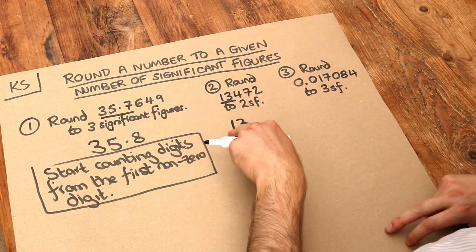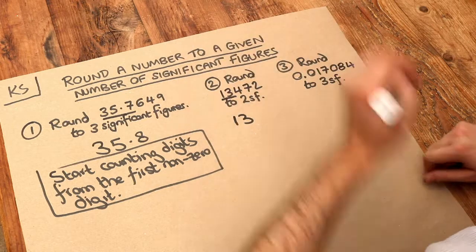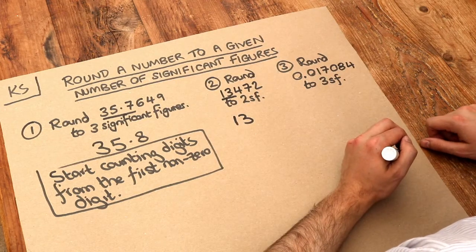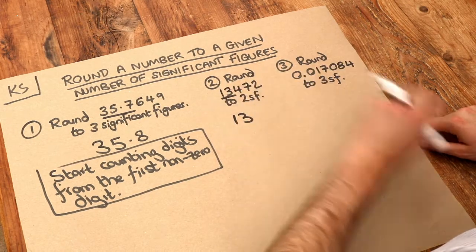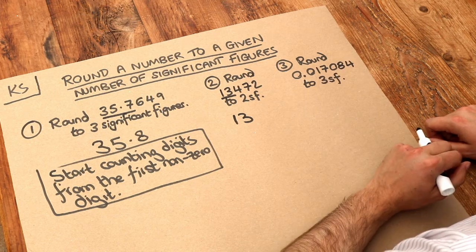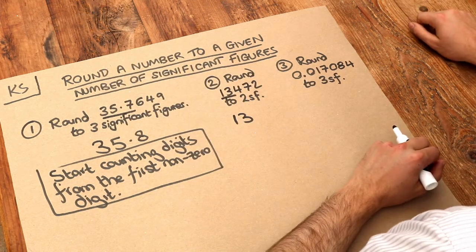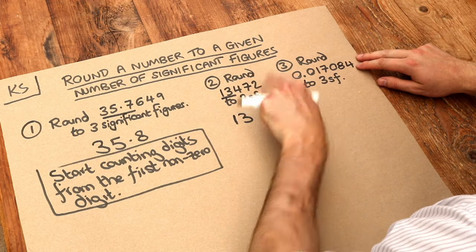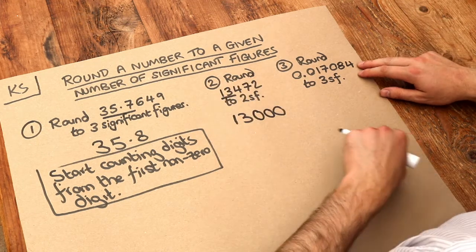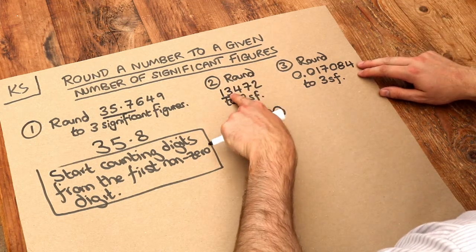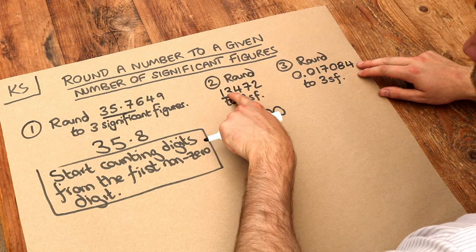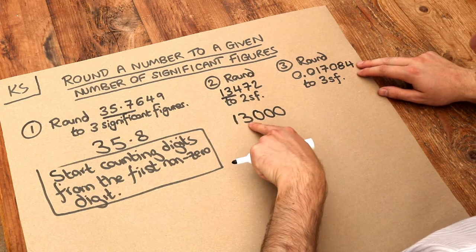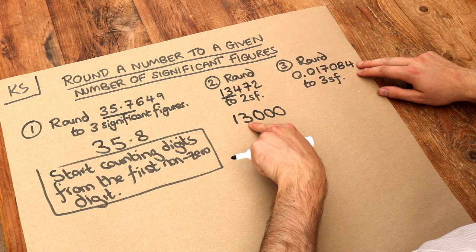But the final answer is not going to be 13. Because 13 is a very different number to 13,472. It's hardly like we've rounded 13,472 to 13. We've got a completely different number. So we have to put zeros for the remaining digits. And the reason is we need that three digit to stay as a thousands digit. It's the thousands digit here. And by putting those zeros there, we ensure that three is still the thousands digit there.